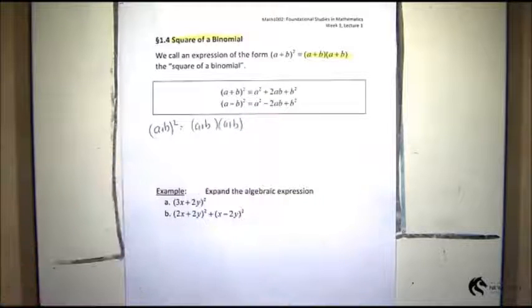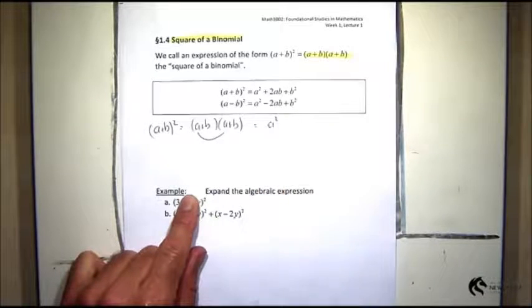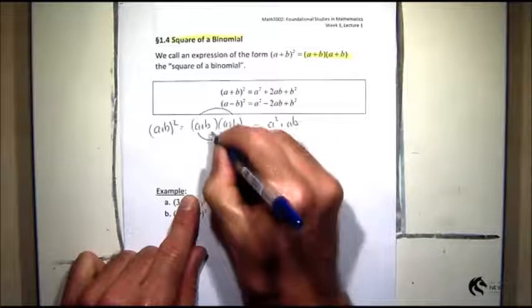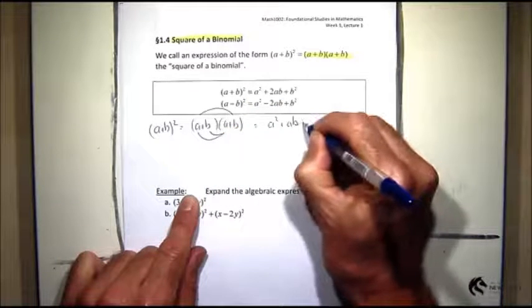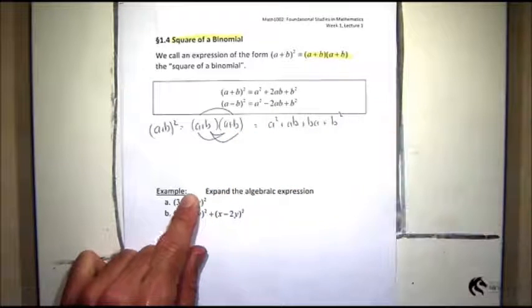So I will go first, that's a². Outside, plus ab. Inside, plus ba. And last, b².